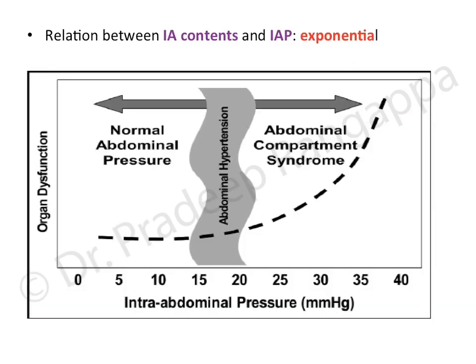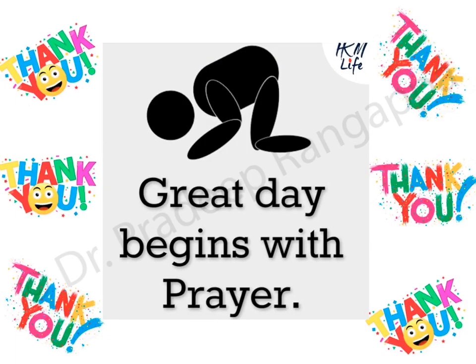The relationship between intra-abdominal volume and intra-abdominal pressure is exponential, similar to an ICP curve. There is a critical threshold below which increasing volume does not significantly raise pressure, but beyond that threshold there is an exponential rise in pressure with even small increases in volume. We must be aware of this critical threshold. Thank you very much.